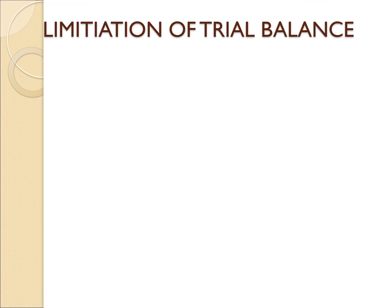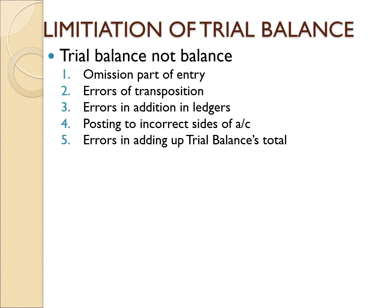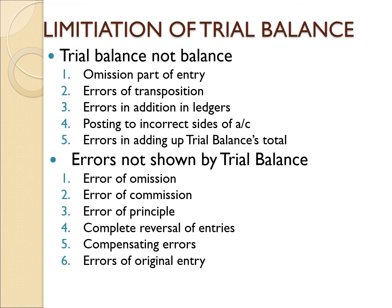There are limitations to the trial balance. Errors that cause an imbalance include omission, power entry errors, transpositions, additional ledger entries, or posting to an incorrect account. However, even if the trial balance is balanced, it does not guarantee there are no errors. Errors not revealed by the trial balance include errors of omission, errors of commission, errors of principle, compensating errors, and errors in the original entry. These will be covered in the next topic on correcting errors in accounts.